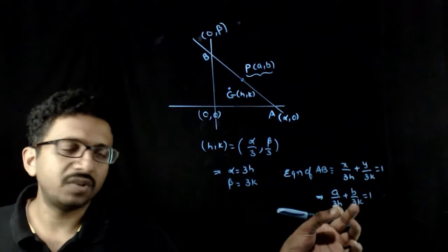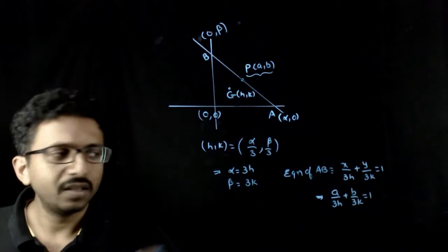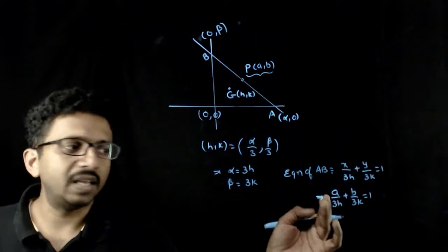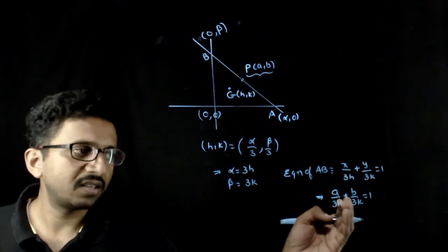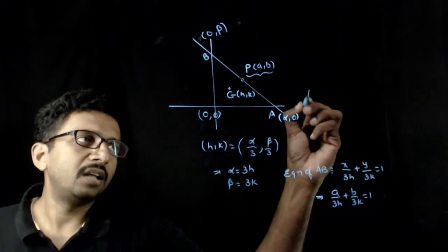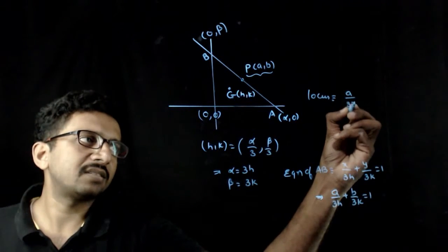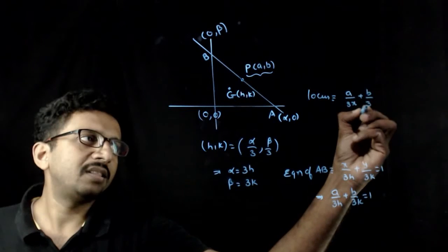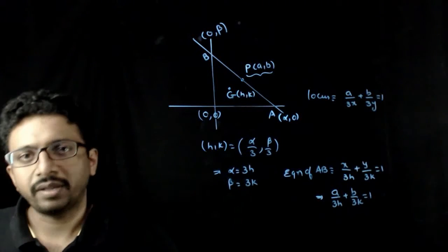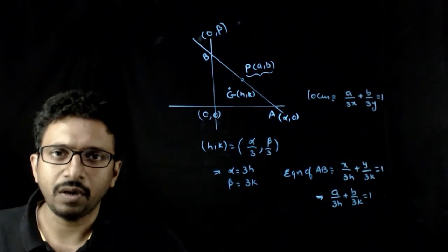Now this is the condition which H comma K has to satisfy. The equation of locus is just replacing H with x and K with y. So, the locus is nothing but a by 3x plus b by 3y is equal to 1. That is the equation of locus.